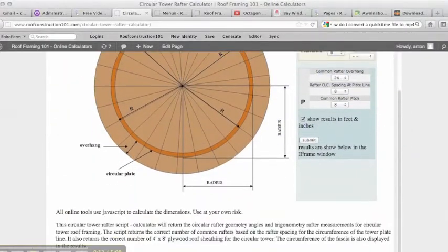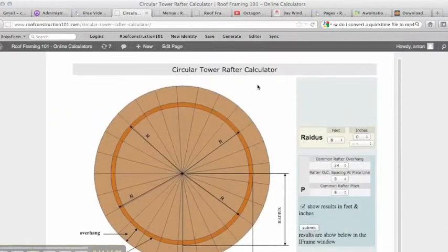We can see here that we just need to know the radius. So whatever the radius is from outside to outside here, you can plug that in. We'll just go ahead and leave it as 8 feet. We see that our common overhang run is 24 inches.